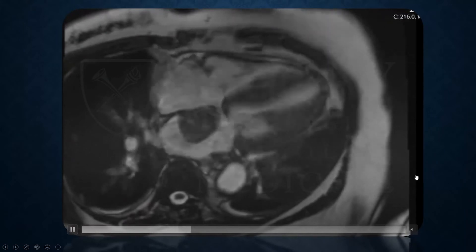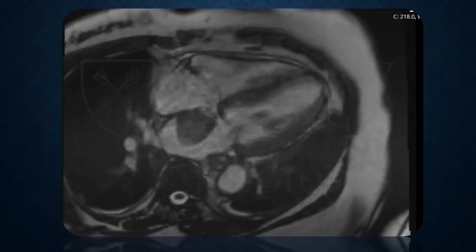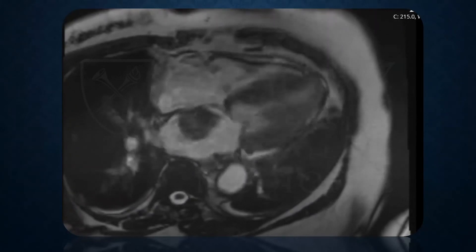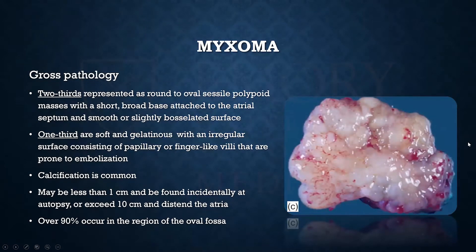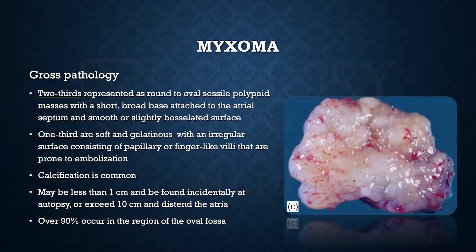This is the same patient on cardiac MRI. Most commonly, atrial myxomas are attached to the septum — many near the fossa ovalis. Grossly, about two-thirds of myxomas are more rounded or oval-shaped with sessile polyps and a short, broad-based stem attaching them to the endocardium, most commonly at the atrial septum. About a third are more gelatinous and irregular with papillary structures jutting out. Common calcification is found near the core, and these can embolize or release pro-inflammatory cytokines causing systemic symptoms.